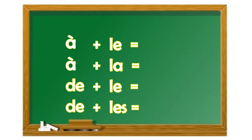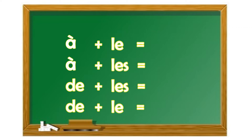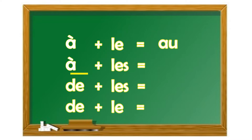Le résultat donne un nouvel article. À partir de la préposition « à » et de l'article « le », ça nous donne « au », sans X, au singulier. En deuxième lieu, la préposition « à » plus l'article « les » nous donne « aux » avec X, donc au pluriel.